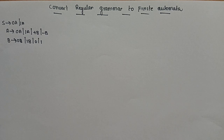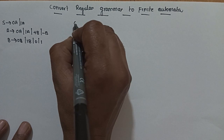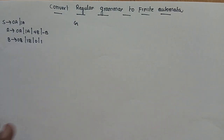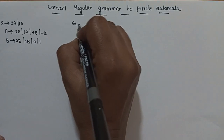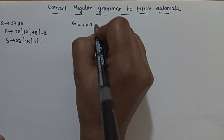In my previous videos, I already covered regular grammar and finite state automata. Regular grammar is a four-tuple function: G is equal to V, T, P, S.